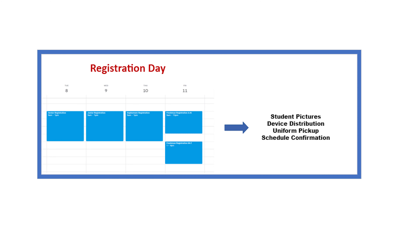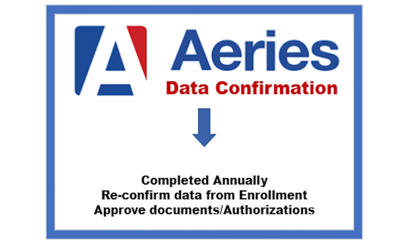Registration is done annually in person at your school site. Some things your school may use registration for are paying fees and fines, picking up uniforms, locker assignments, taking school pictures, or getting a class schedule. Let's take a closer look at each step inside data confirmation and how to help your school better support your student.